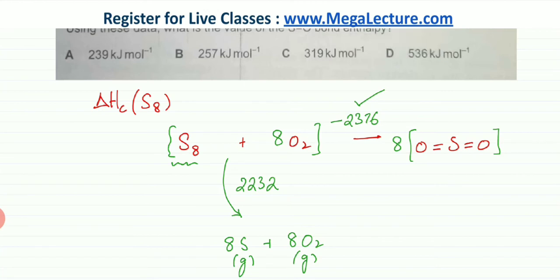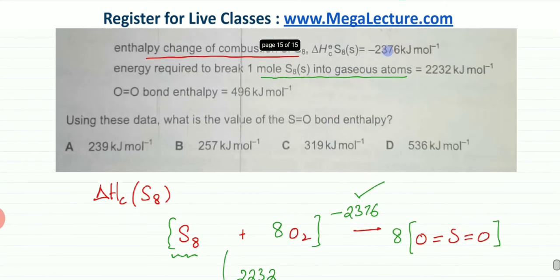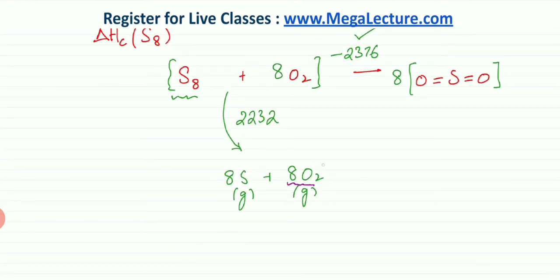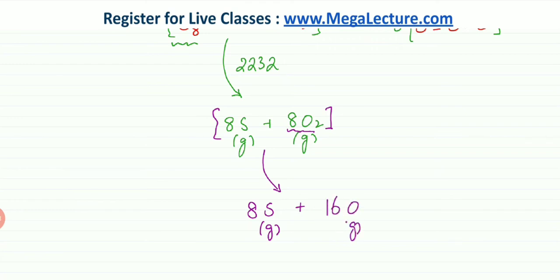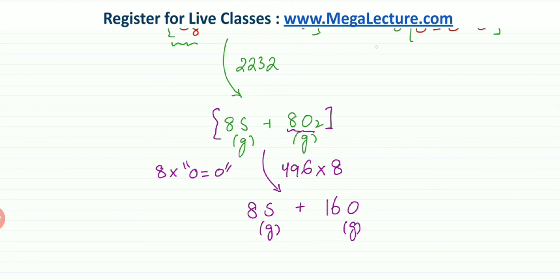The next step in the alternative path is to break the oxygen molecules. We break all 8 O=O double bonds, giving 16 oxygen gaseous atoms. The bond energy of O=O is 496 kJ/mol, so the energy required to break 8 O=O bonds is 496 multiplied by 8.